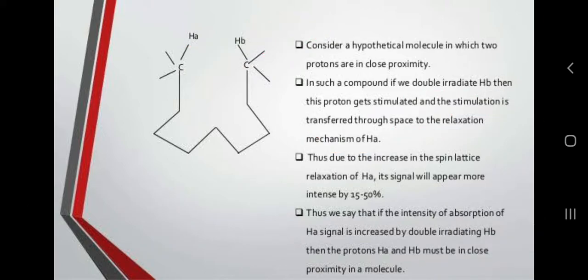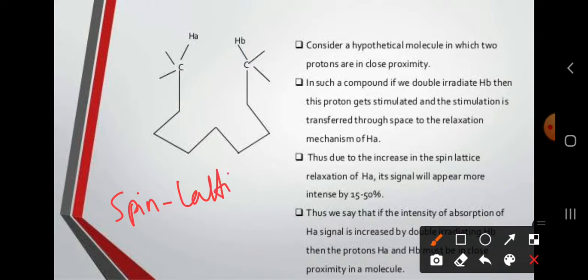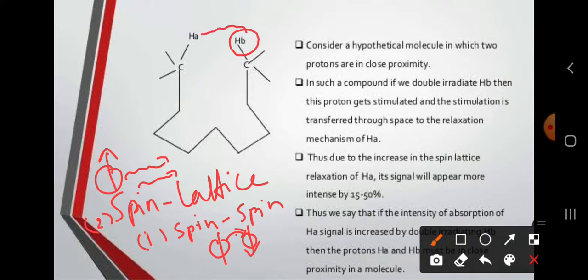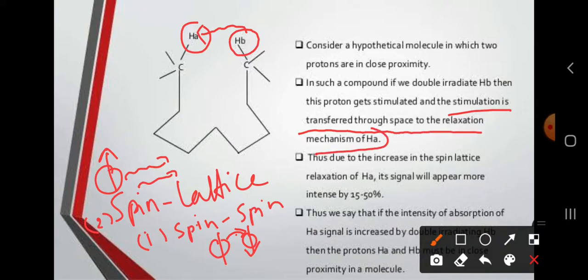The spin-lattice relaxation phenomenon involves the loss of energy without emission of radiation. This energy is released in two ways: spin-spin relaxation, where a proton transfers energy to a neighboring proton, and spin-lattice relaxation, where the proton transfers energy to the surrounding lattice or space. The stimulation from HB is transferred through space to the relaxation mechanism of HA.